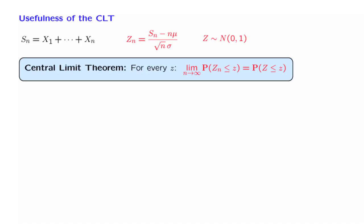The central limit theorem is absolutely remarkable. It is a very deep result, and highly non-trivial and non-intuitive. There's no apparent reason why this random variable here — a standardized version of the sum of random variables — should have an approximately normal distribution.